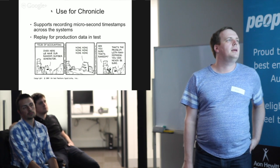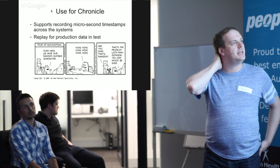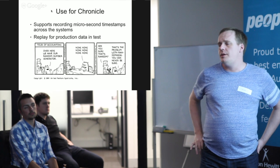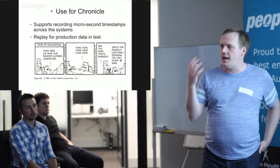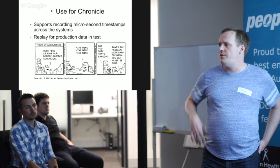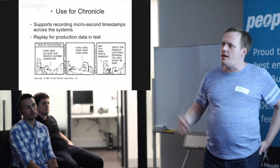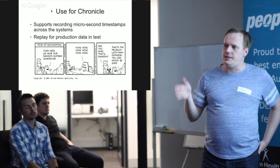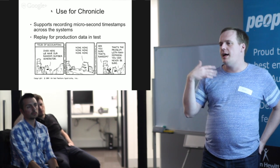Chronicle is designed to record microsecond-resolution timestamps at many different stages in the system. More recently it's being used to replay production data. Once you have a record of all your inputs and outputs, you can replay an entire day's worth of data and reproduce the exact state of the system at any point in the day. With TCP replication you can even have a test system replaying the same data as production as it happens, running in sync with production to see how it behaves.